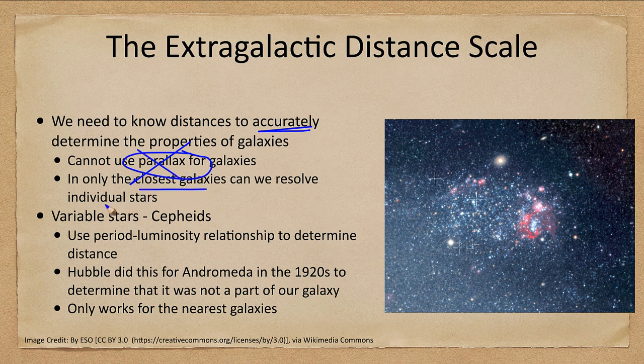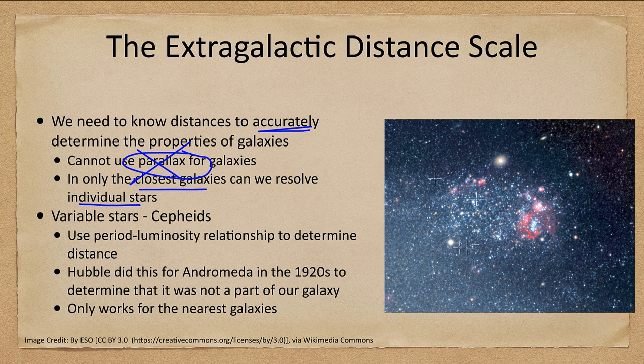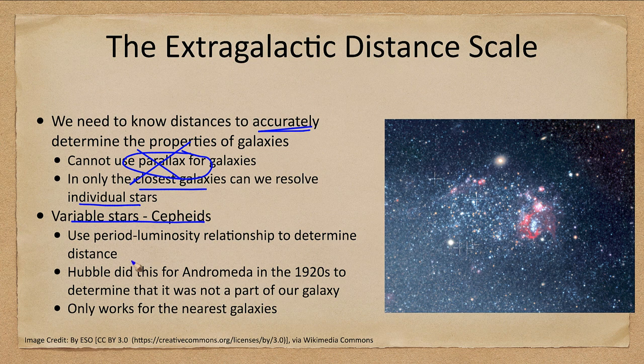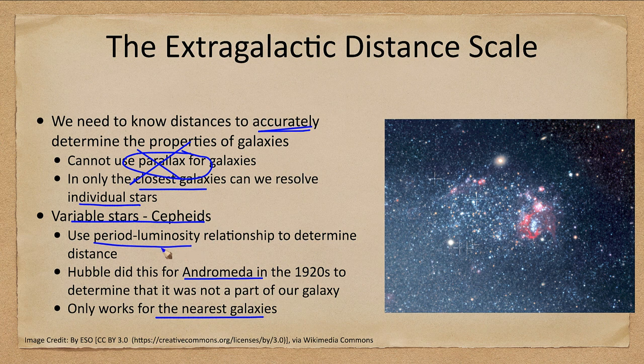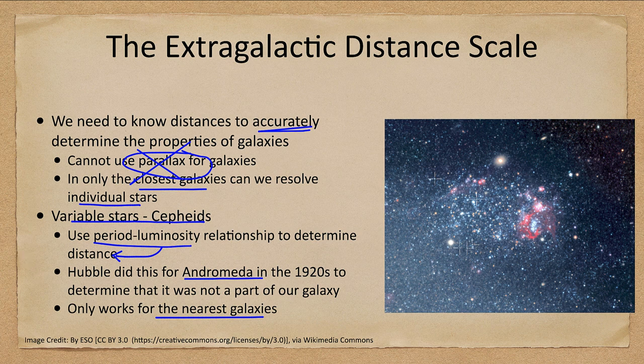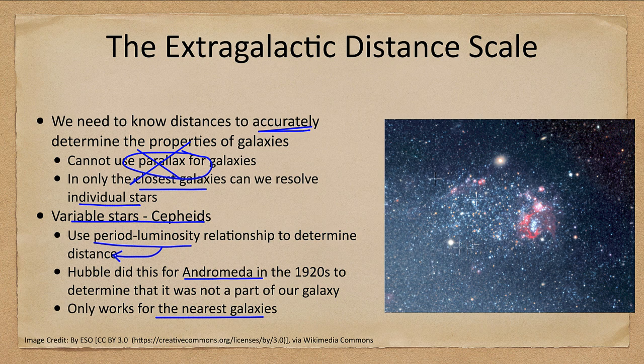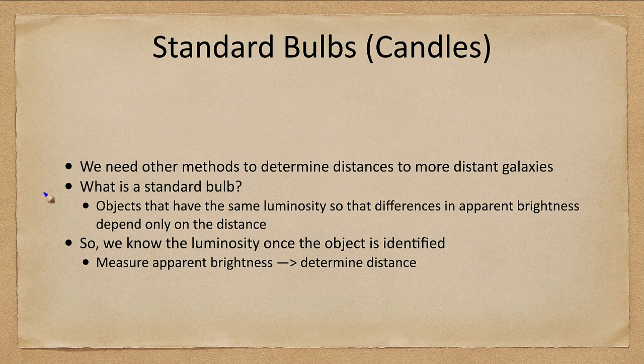Only the closest galaxies can we resolve the individual stars. So things like variable stars and Cepheids do work, but only for the nearest galaxies. This is how we determined that Andromeda was actually another galaxy. So if we find a Cepheid, the period luminosity relationship can be used to give us the distance then. But you have to be able to resolve those stars and you can't see them once you get outside the local neighborhood of galaxies. So we have to use other things.